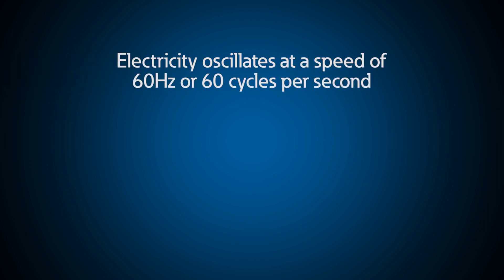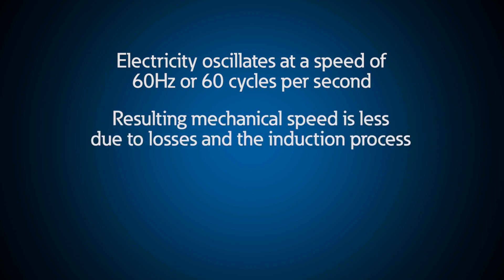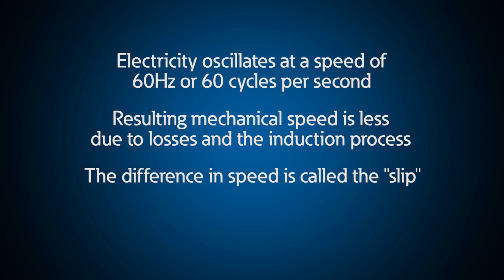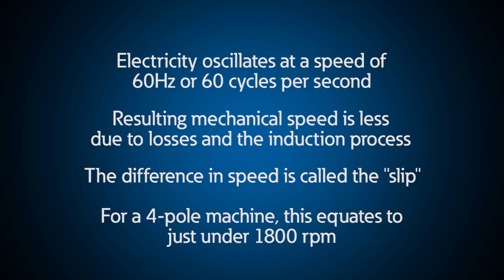The electricity is oscillating at a speed of 60 Hz or 60 cycles per second when it energizes the stator. The resulting mechanical speed of the rotor is a little less due to losses and the induction process, and the difference in speed is called the slip. For a four-pole machine, this equates to just under 1800 revolutions per minute.